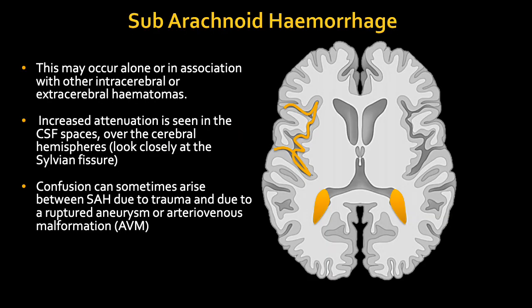The next type is subarachnoid hemorrhage. This may occur in association with intracerebral or extracerebral bleeds. There is increased attenuation in the CSF space, where most blood vessels pass and run through. A subarachnoid hemorrhage occurs when a small artery or vein on the surface of the brain or in the subarachnoid space bleeds between the pia and arachnoid mater. The most common cause is trauma; in the absence of trauma, the most common cause is a ruptured cerebral aneurysm.